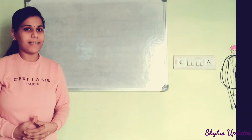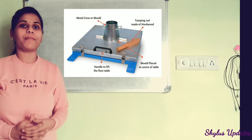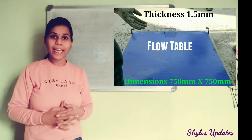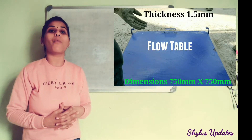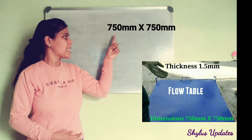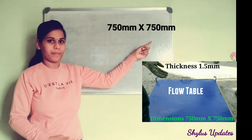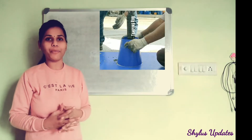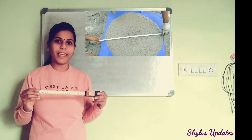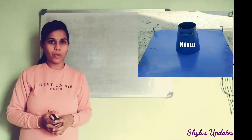Now let's see what are all the apparatus required to do the flow table test. First, a flow table made of metal having thickness 1.5 mm and dimensions of about 750 mm by 750 mm. Also required are a tamping rod made of hardwood, a scoop, a measuring tape or centimeter scale, and a mold or metal cone.